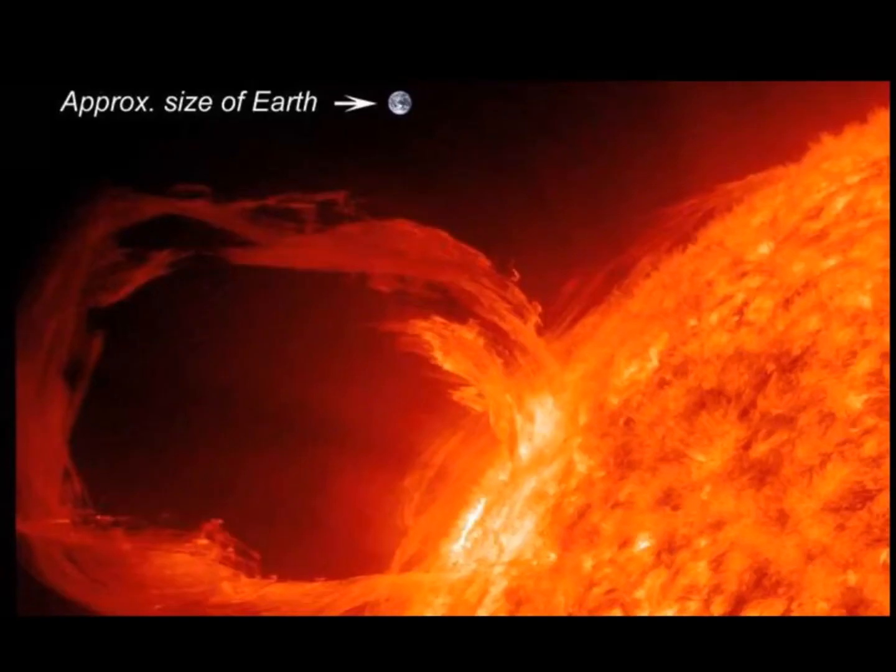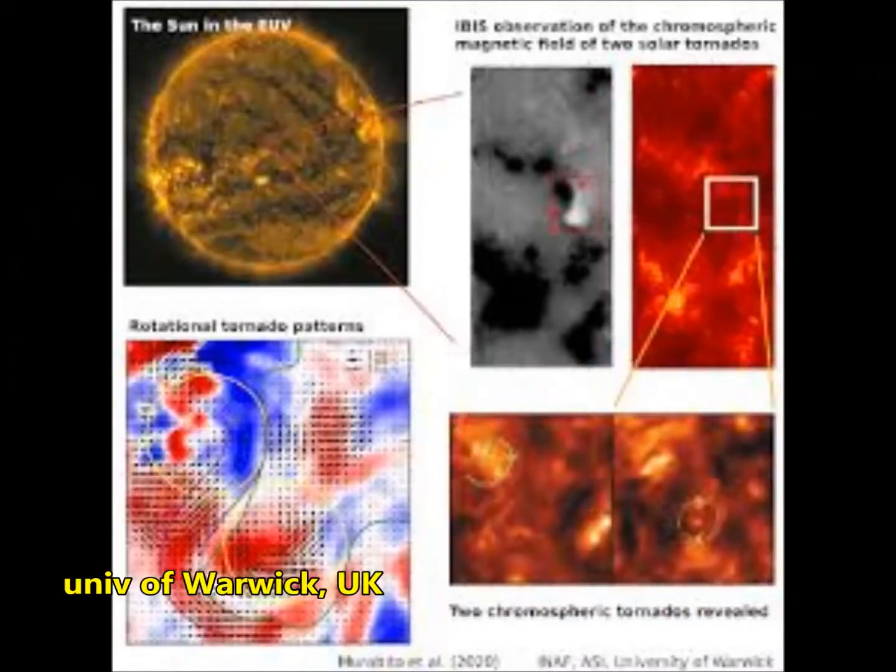Tornadoes of an unimaginable scale have been recorded on the surface of the Sun for the first time according to what experts have announced. The first measurements of the magnetic field in the Sun's chromosphere by space scientists prove solar magnetic fields can trigger tornadoes on the surface of the Sun of an epic scale in the Sun's atmosphere.